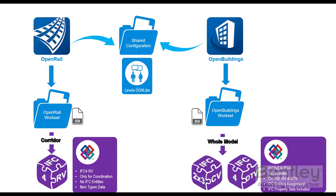Let's explain the relationship between OpenRail and OpenBuildings and how OpenBuildings can take OpenRail data to create proper IFCs. OpenRail has the ability to export to IFC but with limitations — it supports IFC for reference view only for coordination. The main issue is not having the option to map to IFC entities. OpenBuildings supports exporting the whole model to different versions and view definitions, including IFC X3, IFC 4, coordination view, dynamic transfer view, and reference view. Most importantly, it provides the option to map between objects in OpenBuildings and IFC entities. So we can take data from OpenRail and use OpenBuildings to create the right IFC.